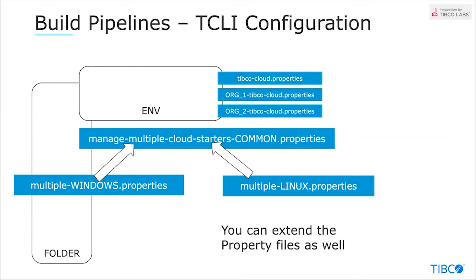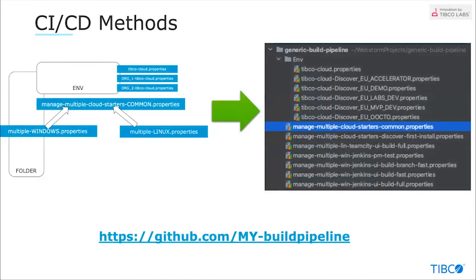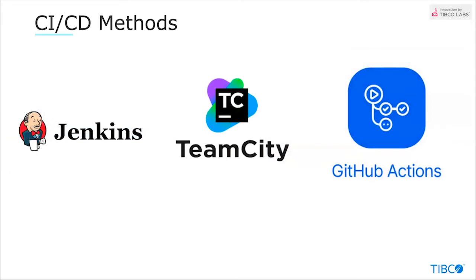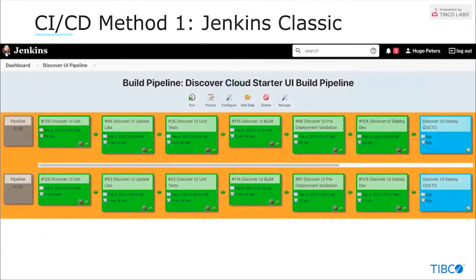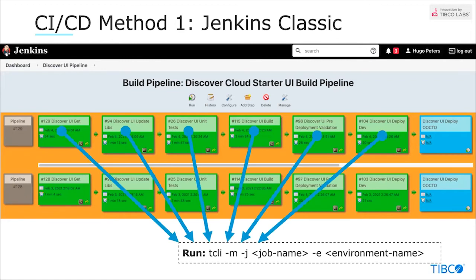When we take all of this and check it into a source repository system, we basically have a build pipeline. Three build pipeline technologies are discussed here: Jenkins, Team City, and GitHub Actions. For Jenkins, there are two methods: classic Jenkins and Jenkins pipeline scripts. In the classic Jenkins method, we use the build pipeline plugin where every task in the pipeline runs one specific job on one specific environment configured in the multiple file.